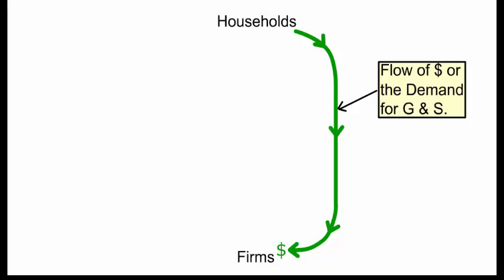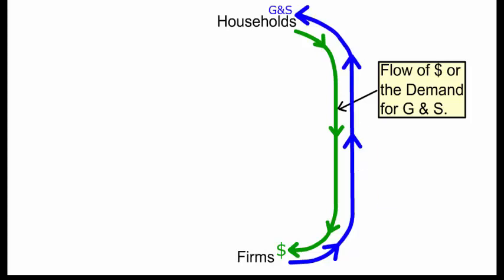In return for the money or the income, the firms supply the households with the goods or services. We call this the flow of goods and services or the supply of goods and services. Let's look at the other side of the circular flow though.